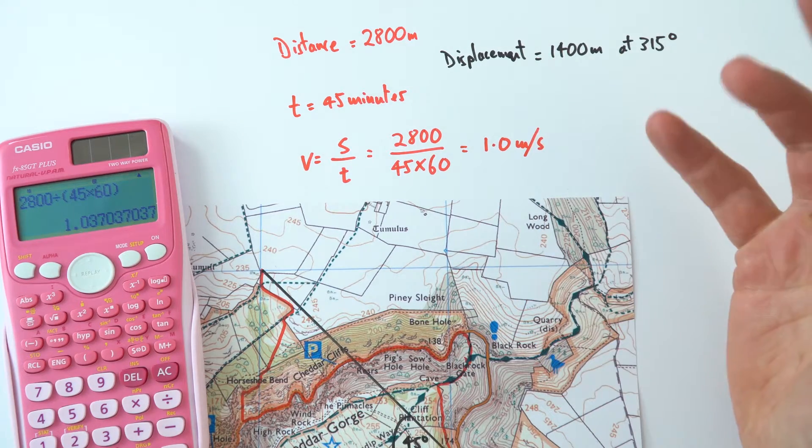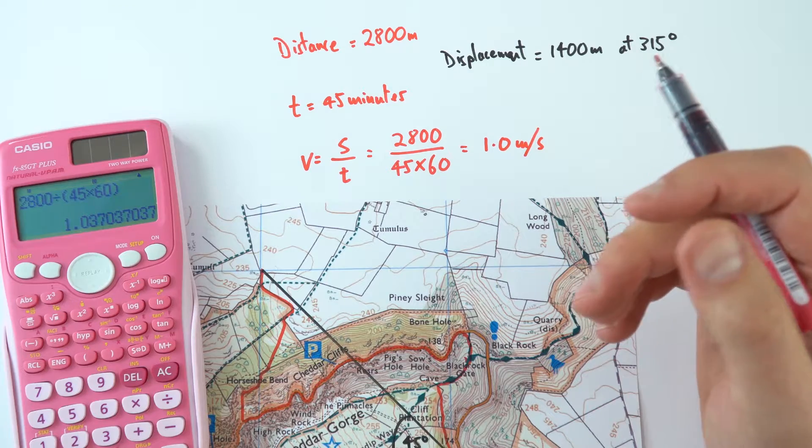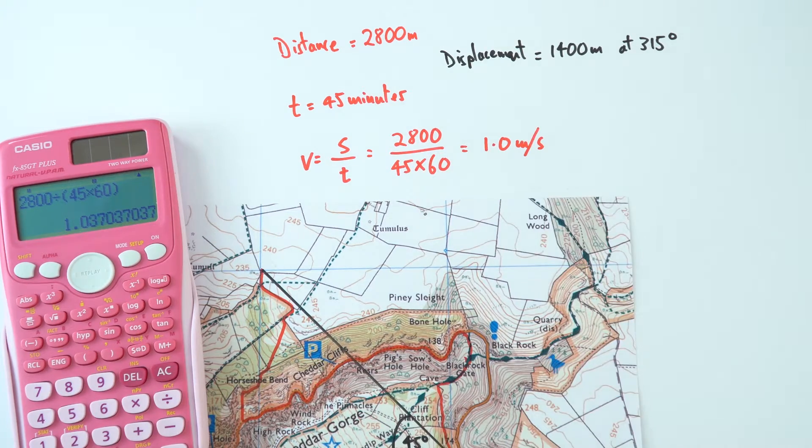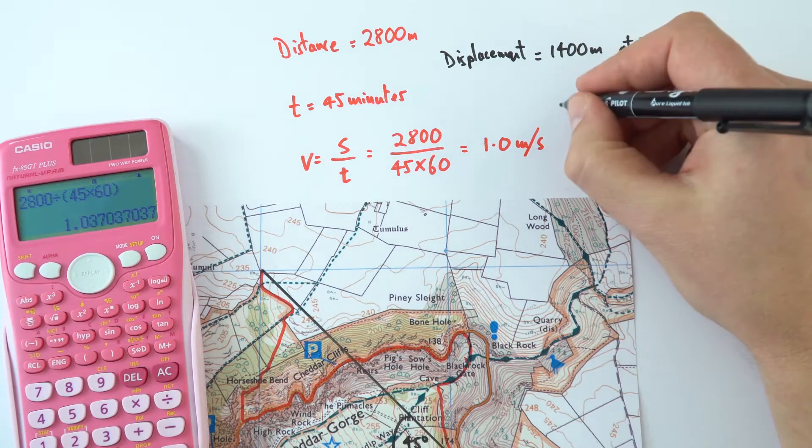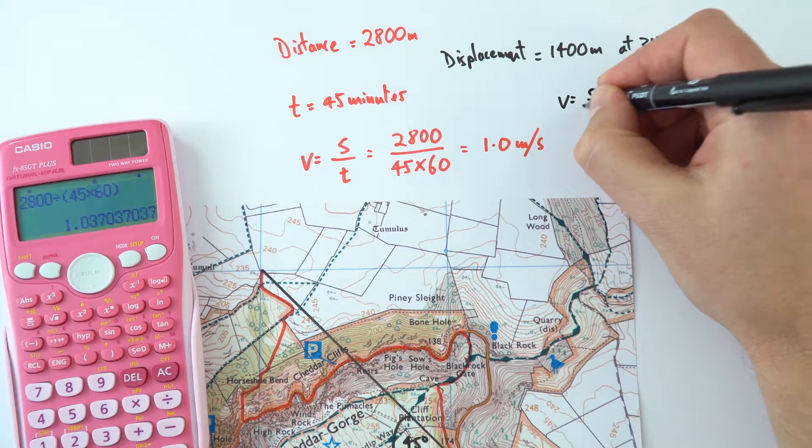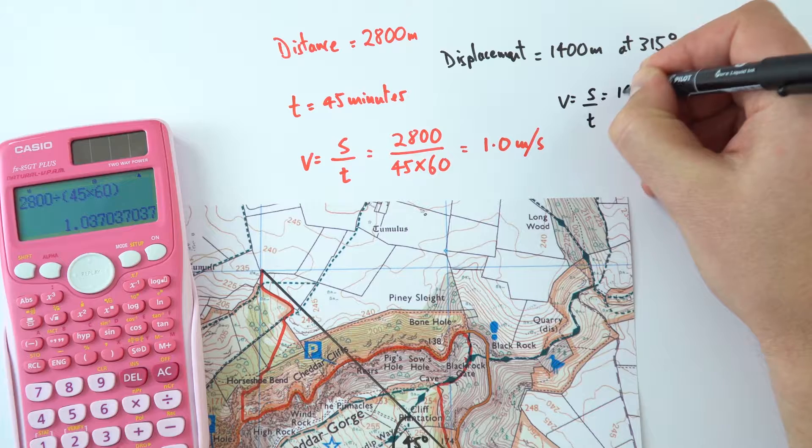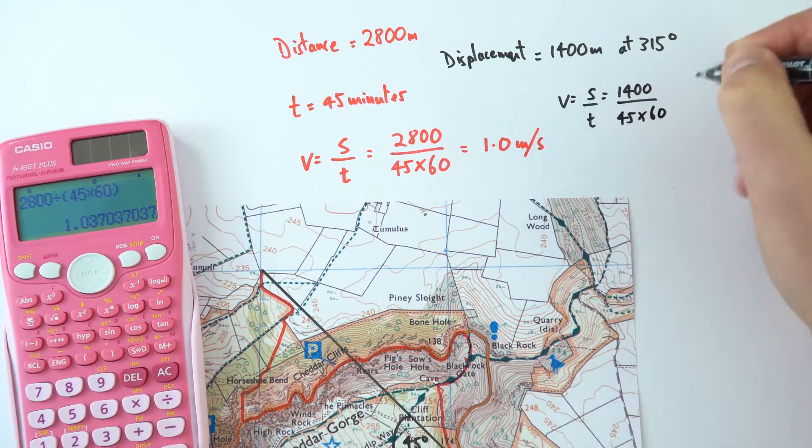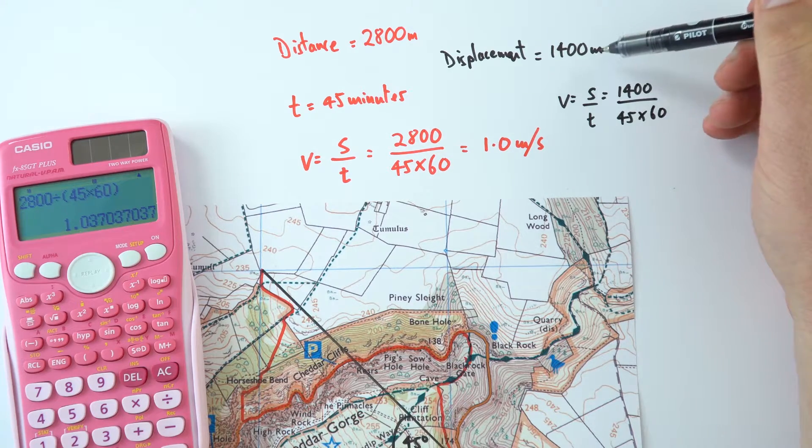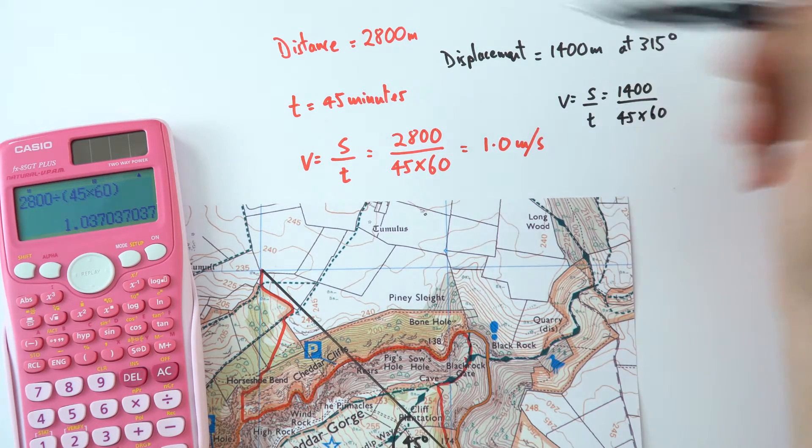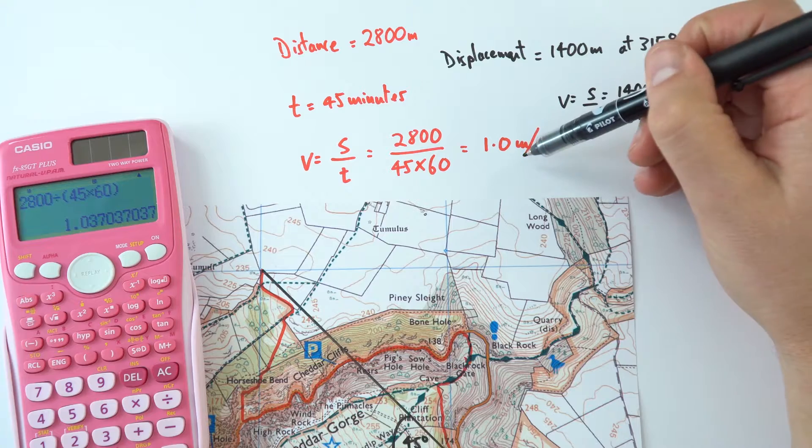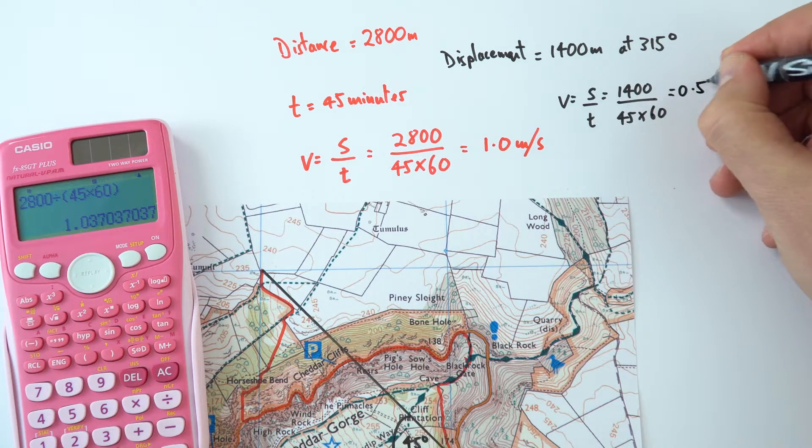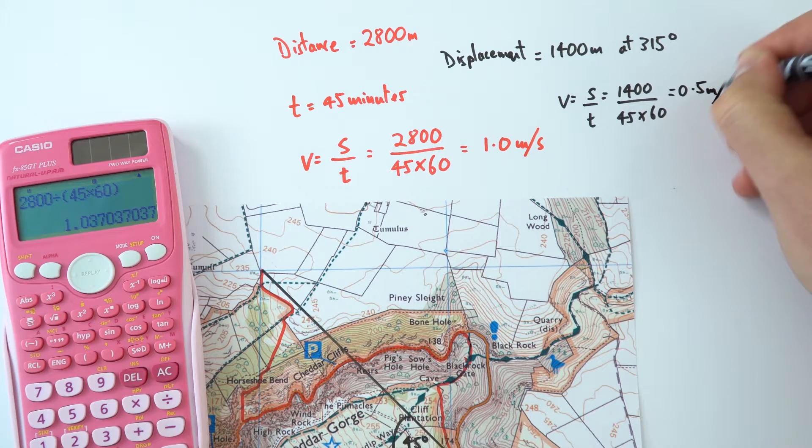But what was my average velocity? Well, velocity really depends upon the displacement rather than the distance. So to work out the velocity, the velocity was equal to the displacement divided by the time, which was equal to 1,400 divided by the same time, which is 45 times 60. And because by complete coincidence, this displacement is half the distance, our answer is going to be half of the previous answer. So that's equal to 0.5 meters per second.